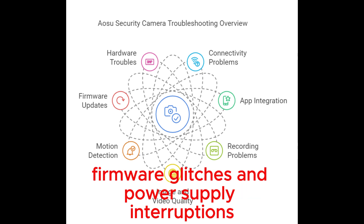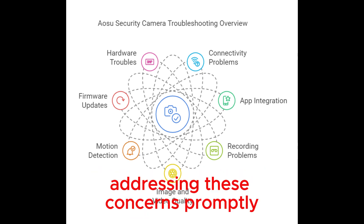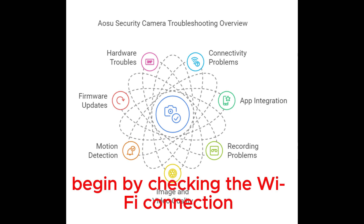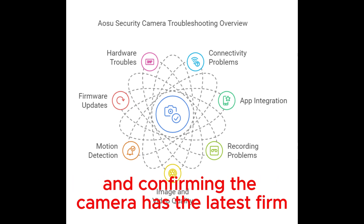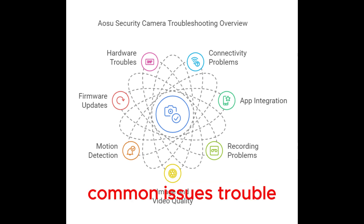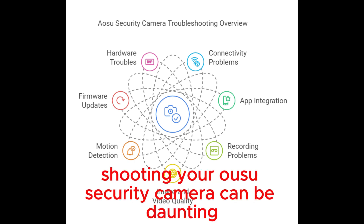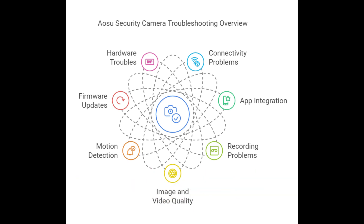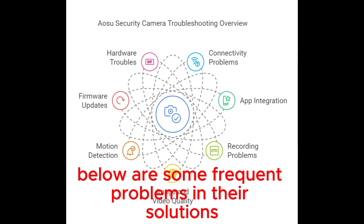IOSU security cameras are known for their reliability and advanced features. Occasionally, users may encounter issues with their devices. Common problems include connectivity issues, firmware glitches, and power supply interruptions. Addressing these concerns promptly ensures the camera functions optimally. Begin by checking the Wi-Fi connection and confirming the camera has the latest firmware update.